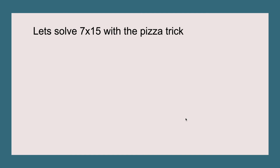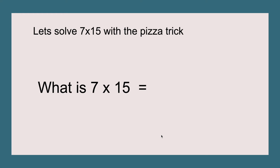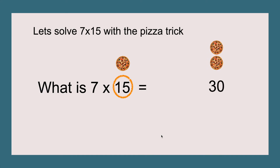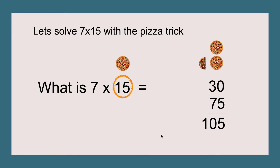Let's solve seven times fifteen with the pizza trick. This is the first two-digit odd number in this tutorial, so it's a little harder. Fifteen times two equals thirty. The half of fifteen is 7.5 — since 7.5 is a decimal, we take the dot away to make it seventy-five. Thirty plus seventy-five equals one hundred and five, so seven times fifteen equals 105.